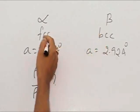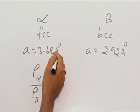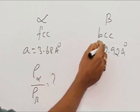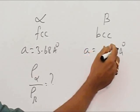In the FCC form, the edge length is 3.68 angstrom units. Whereas in the BCC form, a is equal to 2.92 angstrom units.